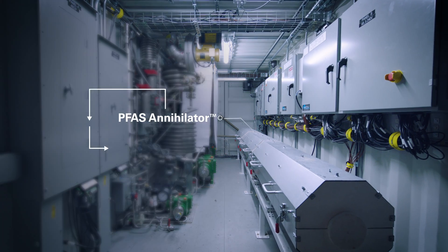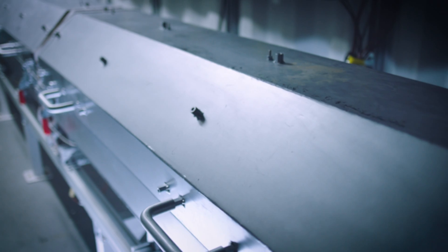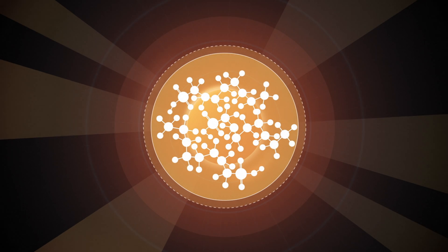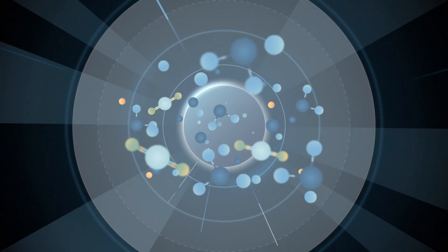The Annihilator is a closed-loop system powered by supercritical water oxidation, or SCWO, which uses increased temperature and pressure to dissolve oxygen to rapidly break down PFAS chemical bonds.